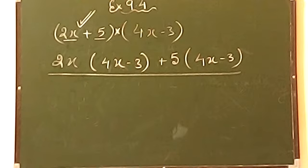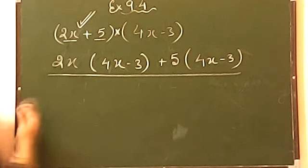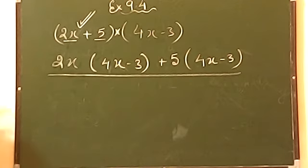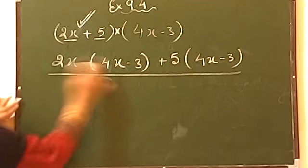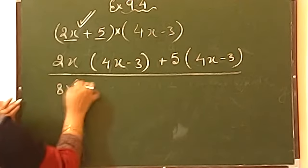Always open the bracket and do it step by step. You just have to open the bracket. 2x multiplied by 4x will give you 8x square.